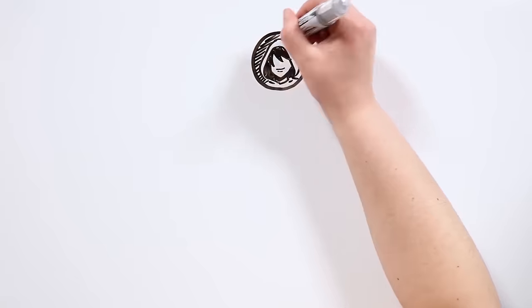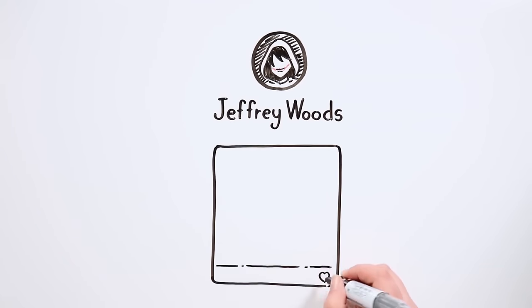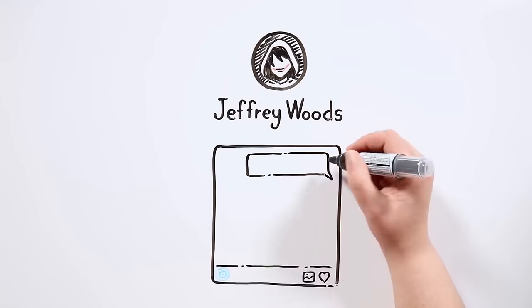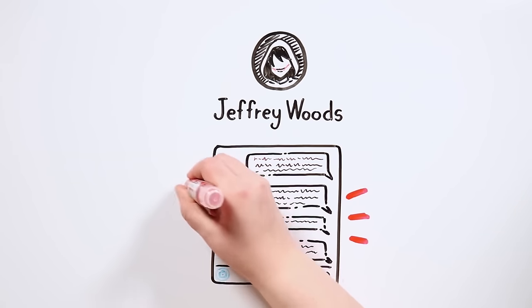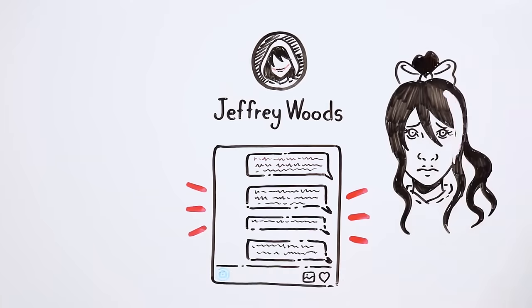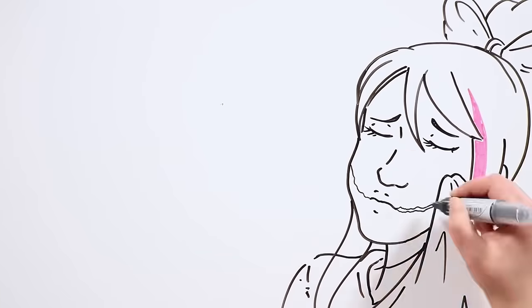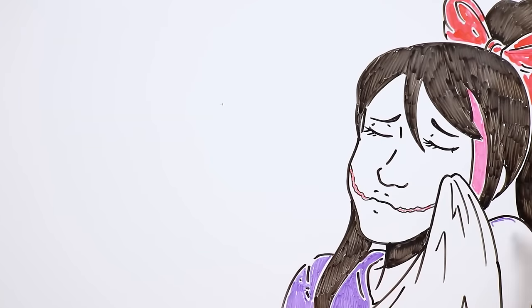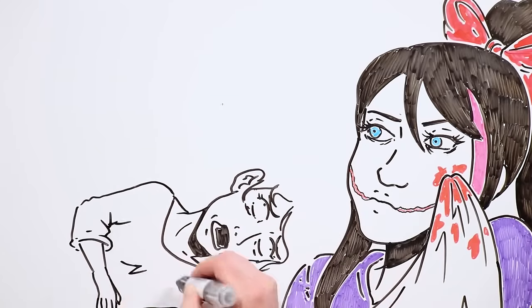She searched a profile… the profile of a boy named Jeffrey Woods. She opened the chat tab… and there they were, dozens of messages written by her with no response from Jeffrey. She felt very sad, and a tear started to go down her cheek. She wiped the tear using a corner of the blanket, but then she realized she had stained her cheek with blood.